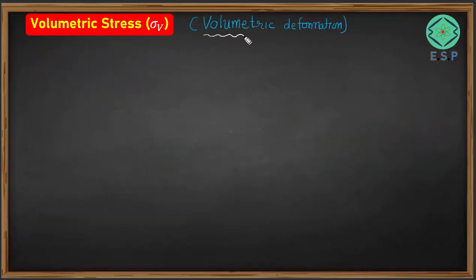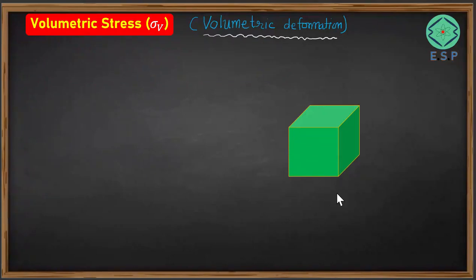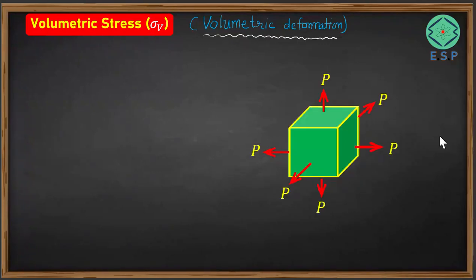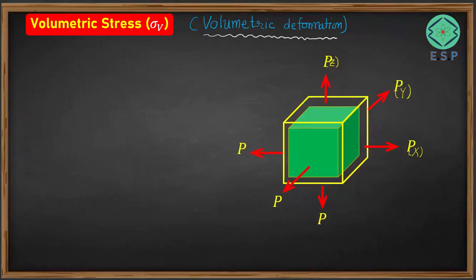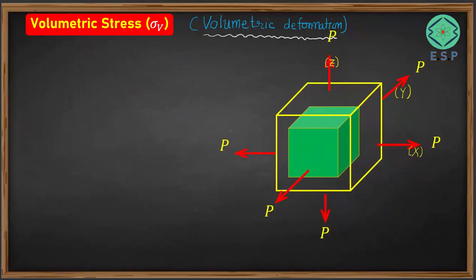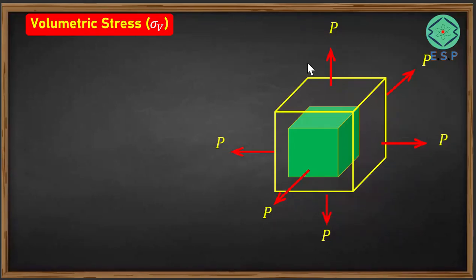Now we will discuss volumetric deformation, where the body undergoes a change in volume. Suppose we have a square block subjected to forces from all three directions — x, y and z. Due to application of these forces there will be volumetric deformation, and the body is going to expand in all three directions, producing volumetric stress acting on the body.